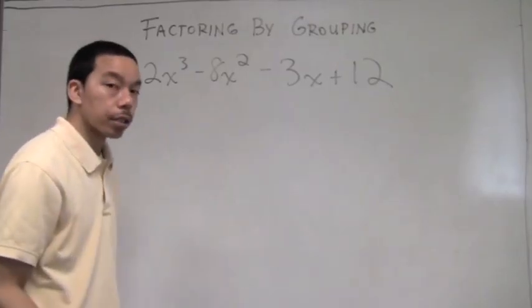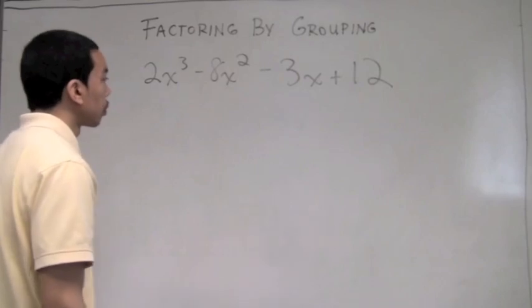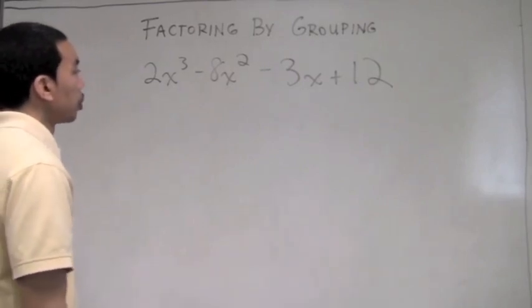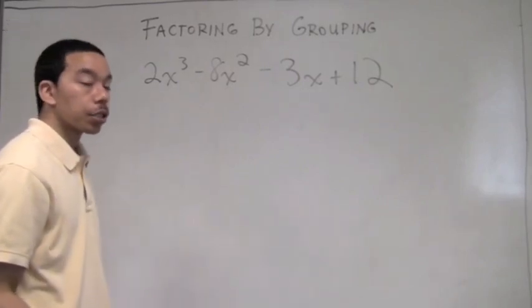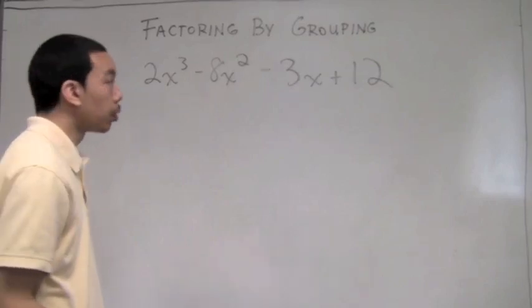Let's look at our first example: 2x cubed, negative 8x squared, negative 3x, positive 12.